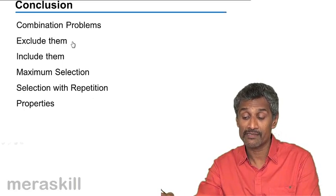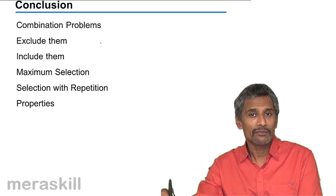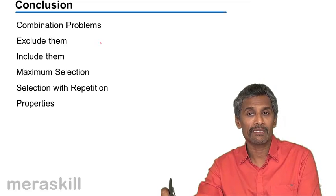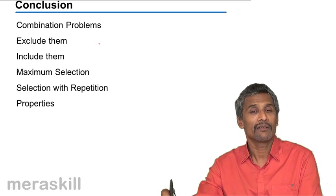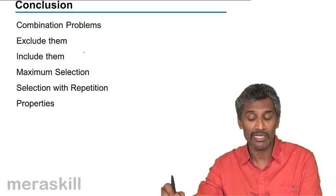Exclude them cases, cases wherein we did the example of how a boy selects two, three books out of eight, wherein two of them - mathematics one and mathematics two - are already selected. The remaining one has to be selected out of six, those kind of include that type of question.